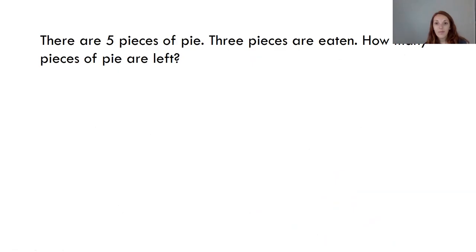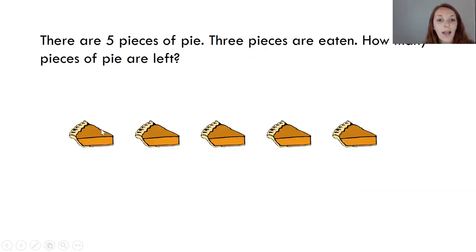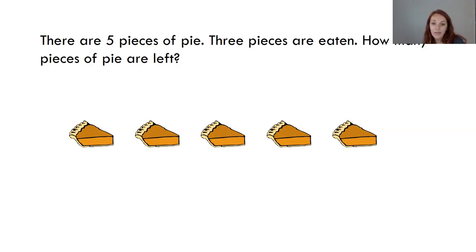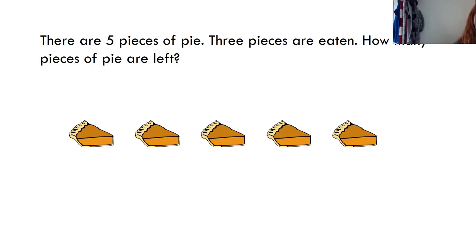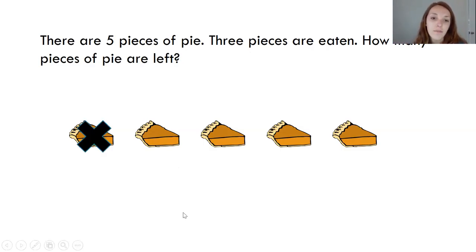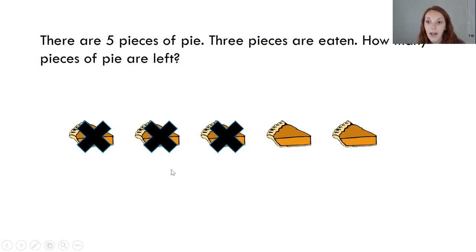There are five pieces of pie. Three pieces are eaten. How many pieces of pie are left? Let me draw that. There were five pieces of pie: one, two, three, four, five. Three pieces were eaten. So how can I show that three of these pieces were eaten? Am I going to draw more pie? No, I'm not going to draw more pie, because it didn't say three more pieces of pie showed up. It shows that three of these pieces of pie have been eaten. So let me cross those out, so that we know those pieces of pie are gone — they have been eaten. How many pieces of pie are left? Two. Two pieces of pie are left. So now we have to write the number sentence that goes with it.